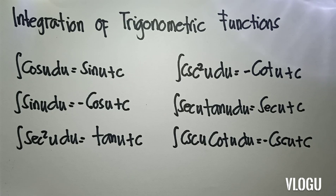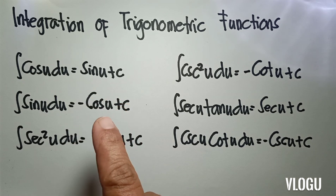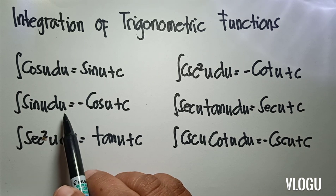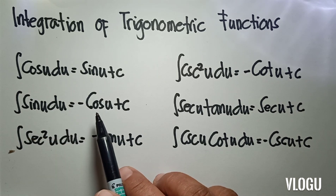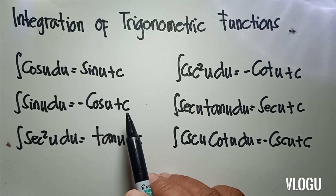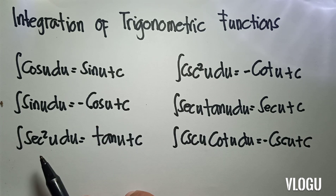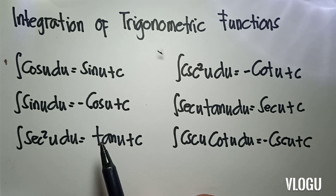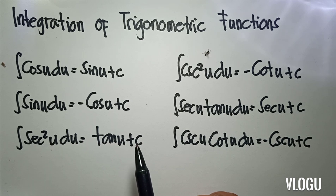Our lesson for today is integration of trigonometric functions. The integral of cosine u du is equal to sine u plus c. The integral of sine u du is equivalent to negative cosine u plus c. The integral of secant squared u du is equivalent to tangent u plus c.